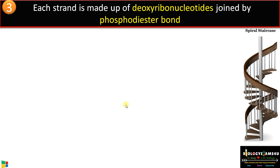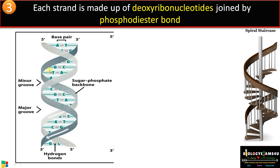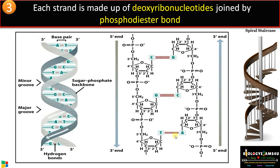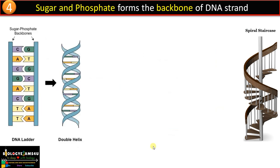Point number four: each strand is made up of deoxyribonucleotides joined by phosphodiester bonds. A nucleotide consists of a nitrogenous base, a pentose sugar, and a phosphate group. Two nucleotides are joined by a phosphodiester bond.